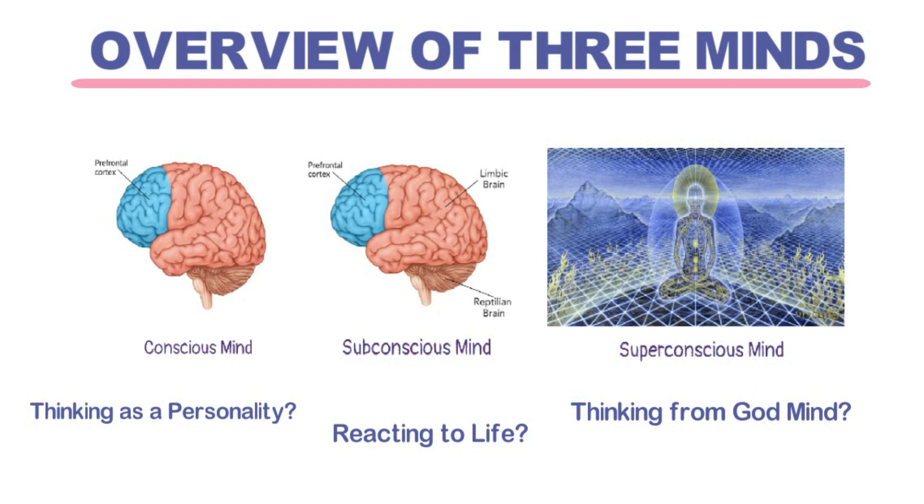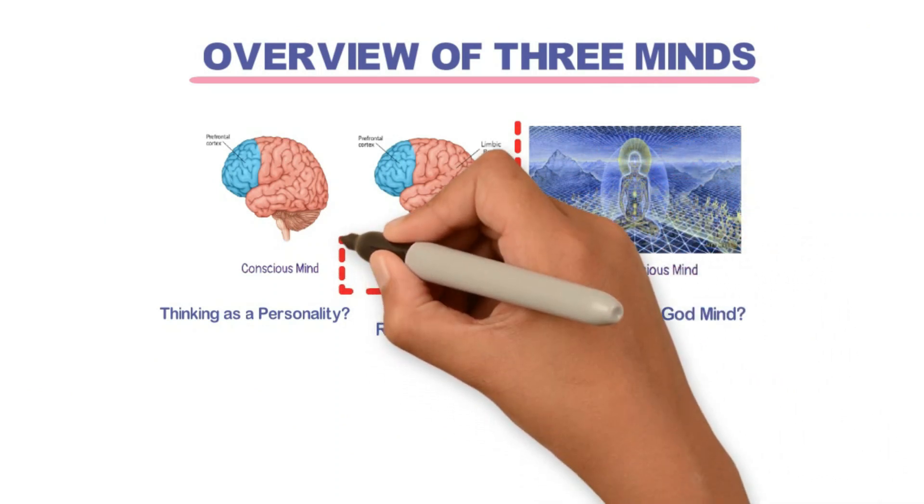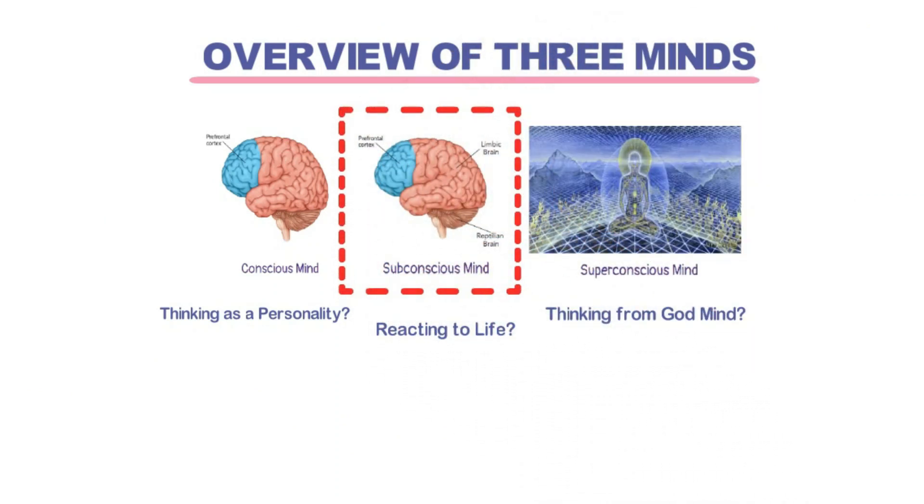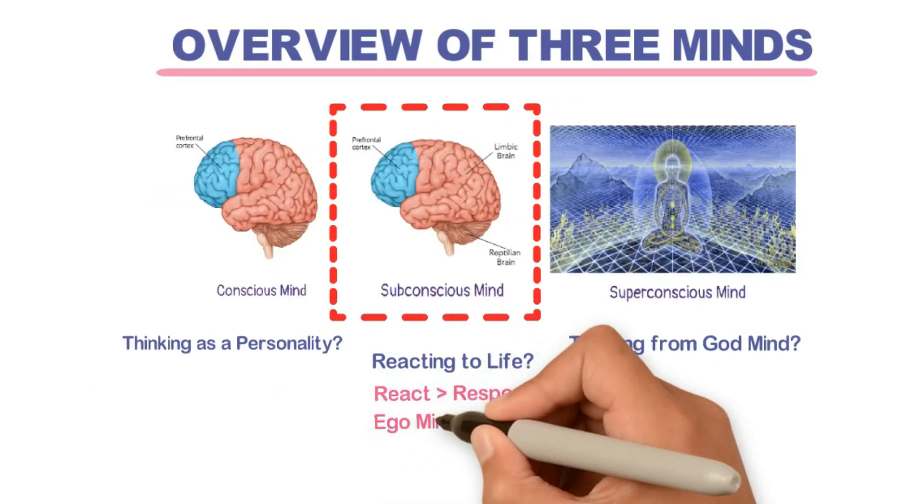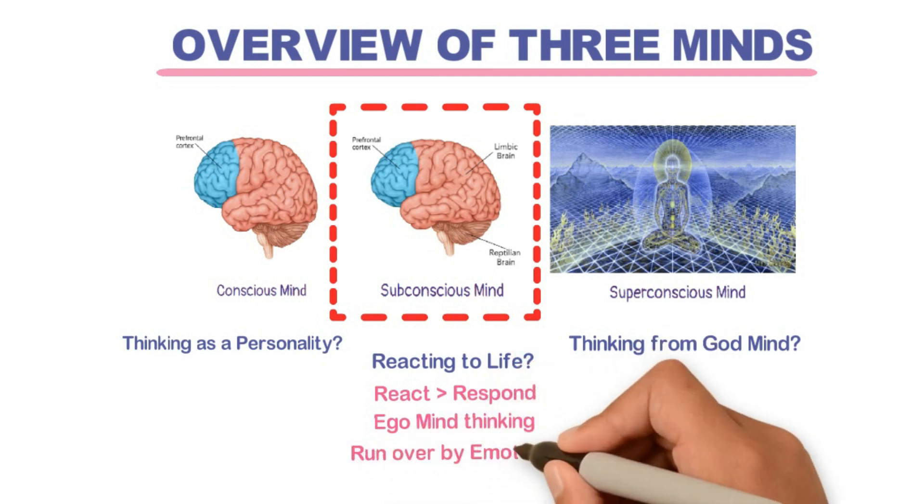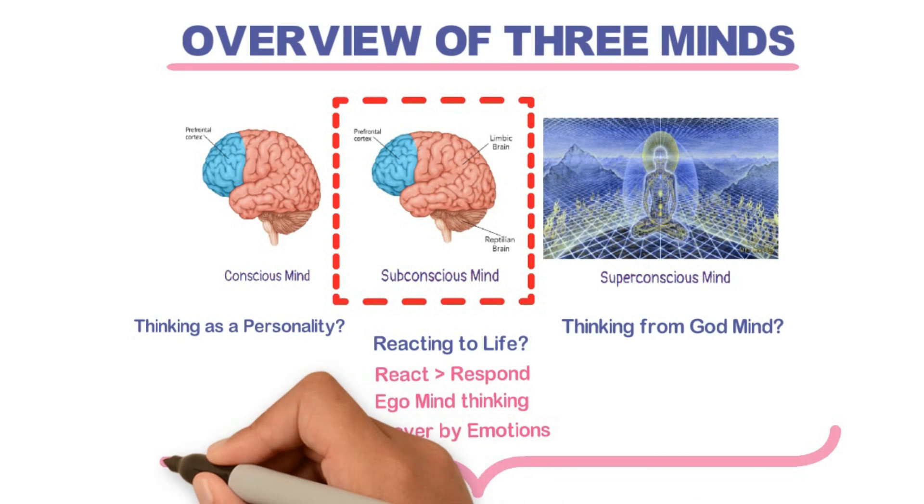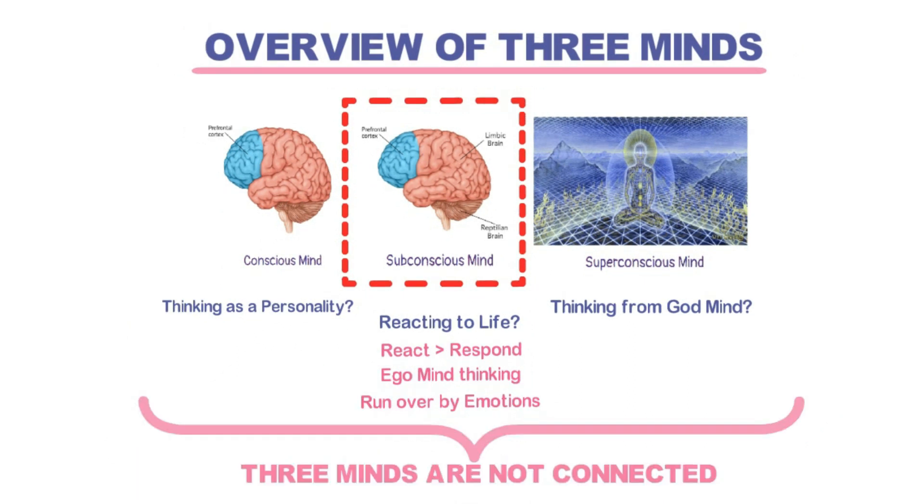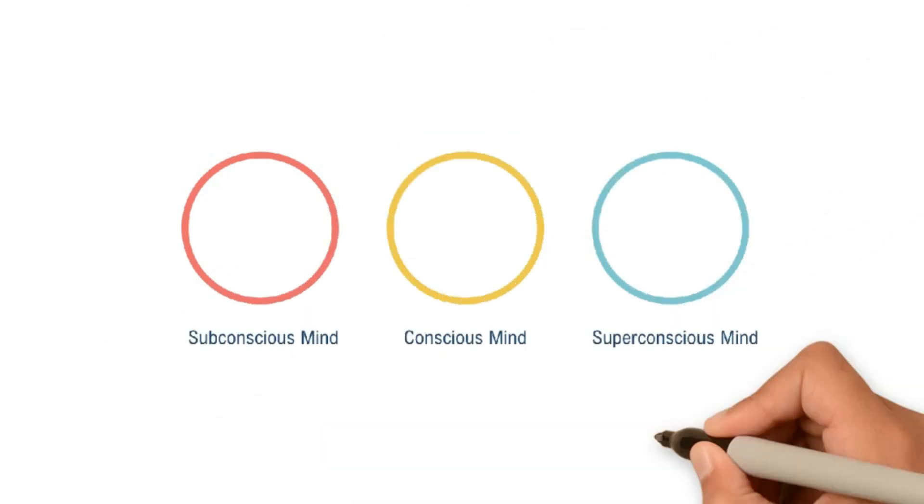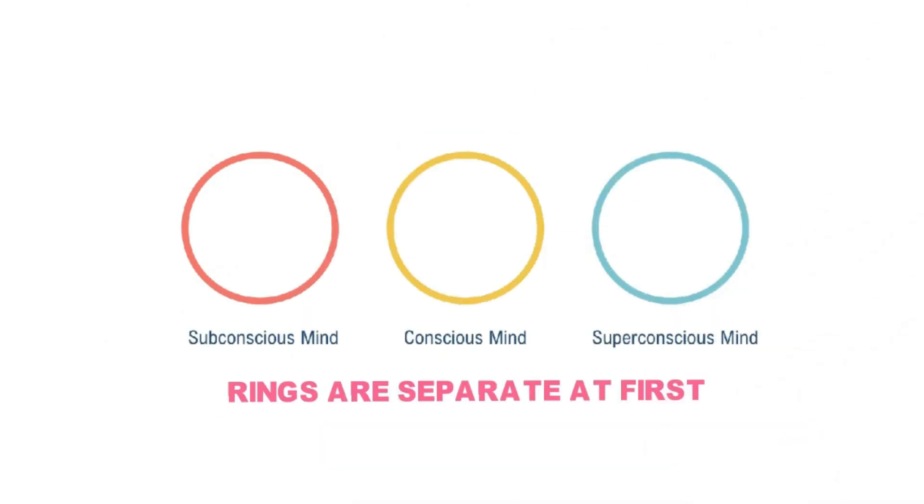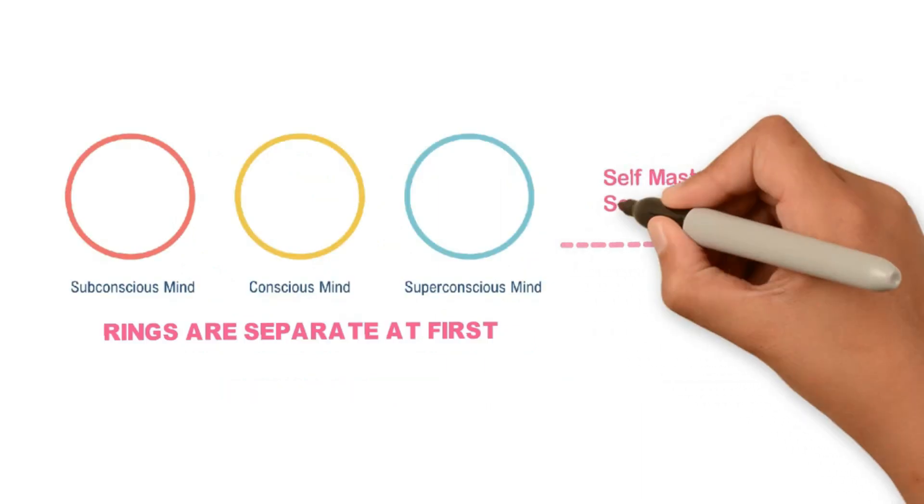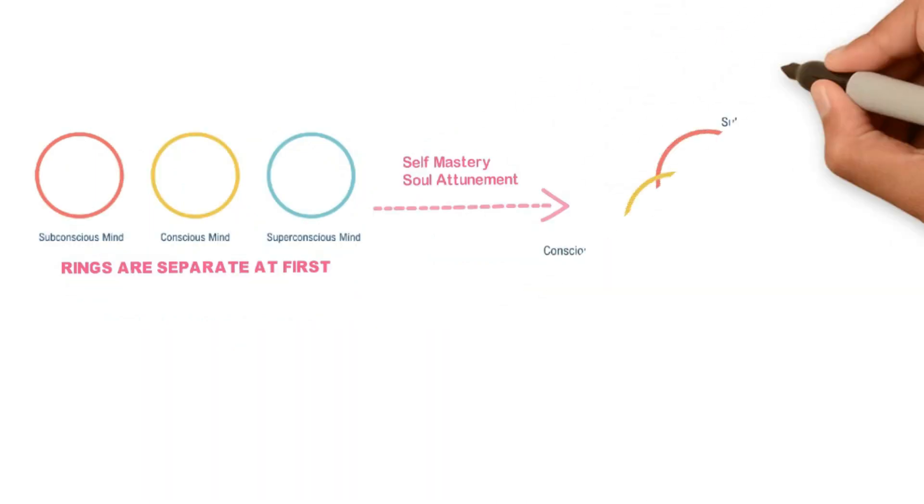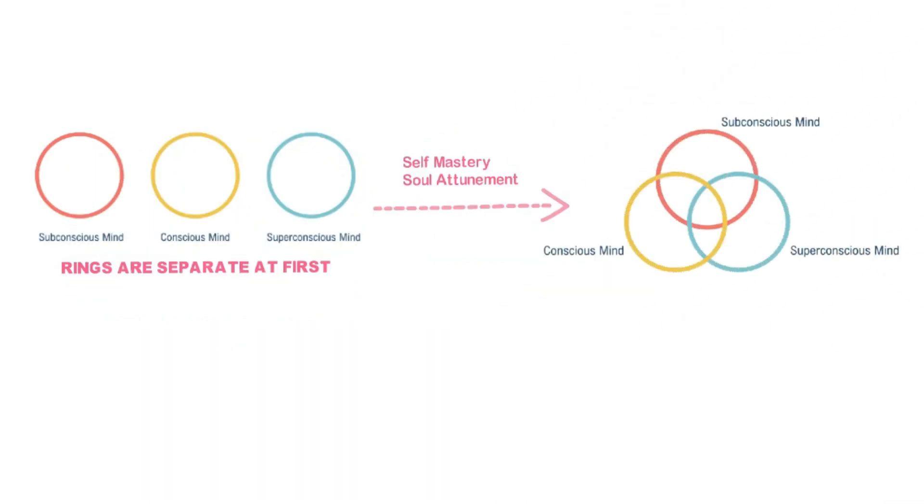Now when we don't have awareness of these three minds, usually the subconscious is running the show. That is we react rather than respond to things around us, we are thinking from our ego, and are easily controlled by our emotions. In most people, these three minds are not connected. If each ring here represents a mind, then these three rings are going to be separate at first. But as you start to develop self-mastery and become attuned to your soul, these rings start interlocking.